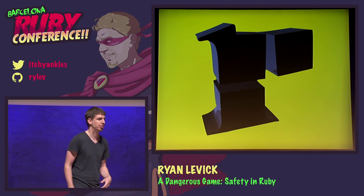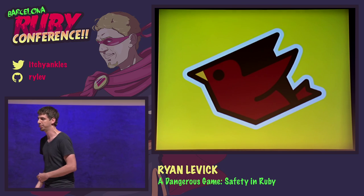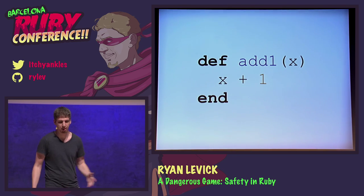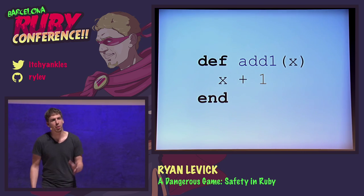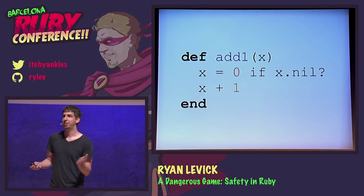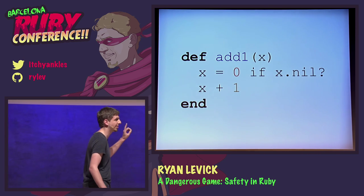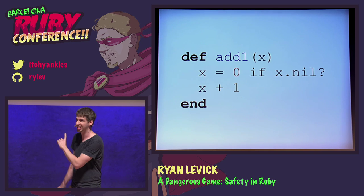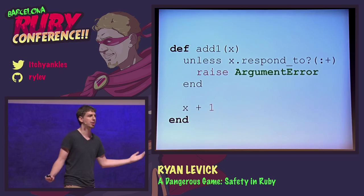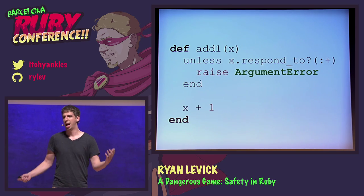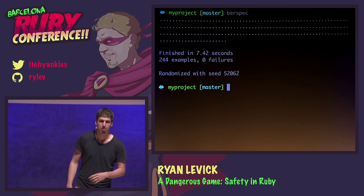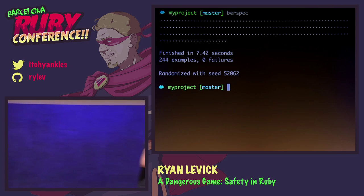What else does Ruby lack? Here we have a simple method that adds 1 to whatever we pass in. What this really says is X has to be something that responds to the message plus. But what happens if X is nil? We might do something very defensive to avoid nil exceptions — checking if X responds to plus and raising an argument error. We sort of test the shit out of our Ruby code.